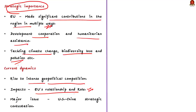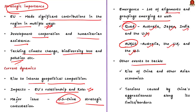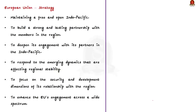The current dynamics in the Indo-Pacific have given rise to intense geopolitical competition, impacting EU's relations and role in the region. The major issue is the US-China strategic contestation. Apart from this, alignments and groupings are emerging — notably the Quad comprising Australia, Japan, India, and the United States. The EU also must cope with the rise of China and other Asian economies, and tensions caused by China's aggressiveness along its borders. At this juncture, it becomes imperative for the EU to show its presence and demonstrate that it is active and aware of happenings in the Indo-Pacific. The EU's strategy for cooperation in the Indo-Pacific announced in September is a notable initiative.